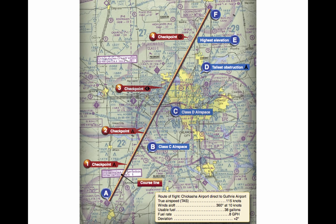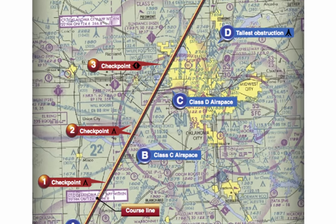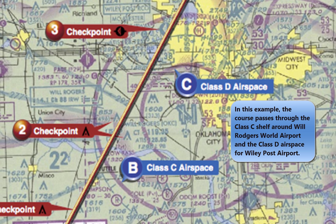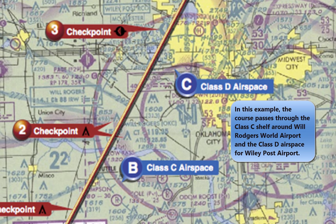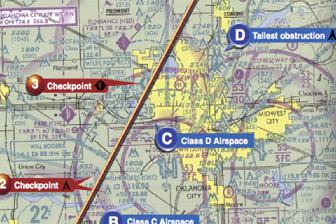The course and areas on either side of the planned route should be checked to determine if there is any type of airspace with which the pilot should be concerned or which has special operational requirements. For this trip, the course passes through a segment of the Class C airspace surrounding Will Rogers World Airport, where the floor is 2,500 feet MSL and the ceiling is 5,300 feet MSL. Also, there is Class D airspace from the surface to 3,800 feet MSL surrounding Wiley Post Airport during the time the control tower is in operation.